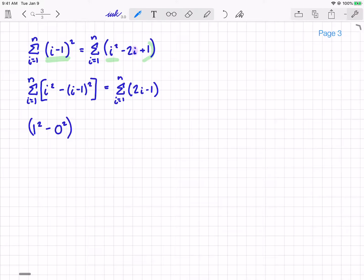That's my first term, my i equals 1 term. Then I'm going to add what I get when I plug in 2, which will just be 2 squared minus 1 squared plus 3 squared minus 2 squared. And this will continue forever, all the way up to my n minus 1 and my n term. So I'm going to have (n-1) squared minus (n-2) squared plus n squared minus (n-1) squared.